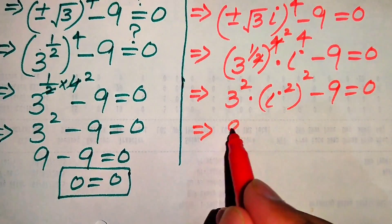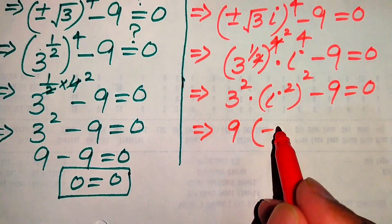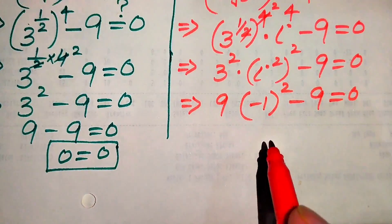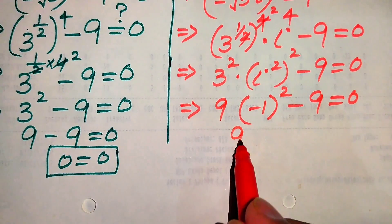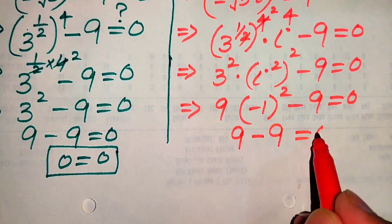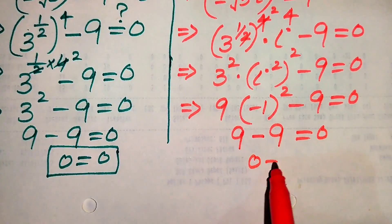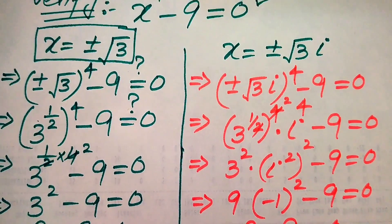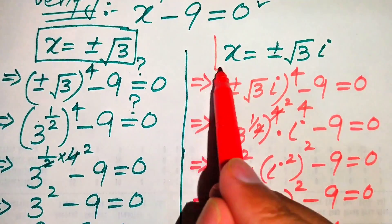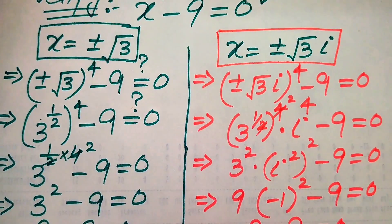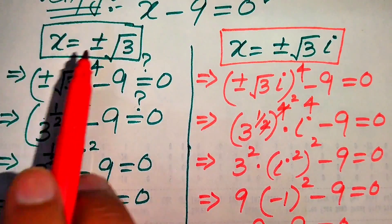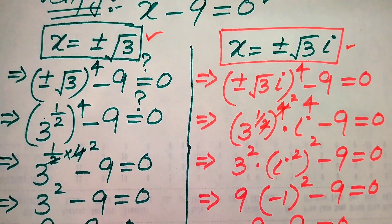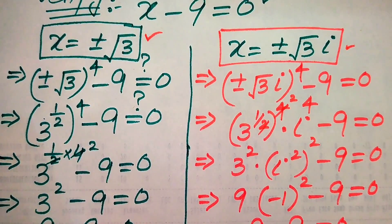Since 3 squared is 9 and iota squared equals minus 1, we get 9 times (minus 1) squared minus 9 equals 0. Since (minus 1) squared equals plus 1, we get 9 times 1 minus 9 equals 0, and finally 0 equals 0. This shows that the second value of x is also satisfied over the given equation. So these are the four solutions of the given equation. This is the final answer. Thank you so much for watching this video — please subscribe to my channel for more.